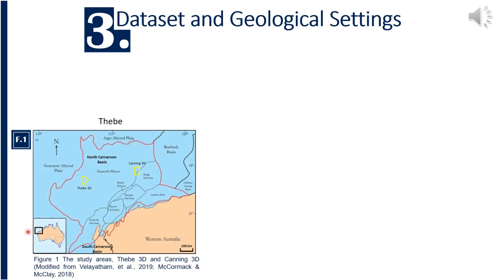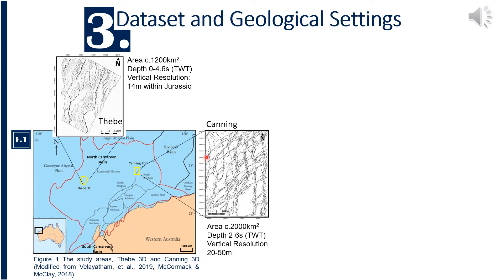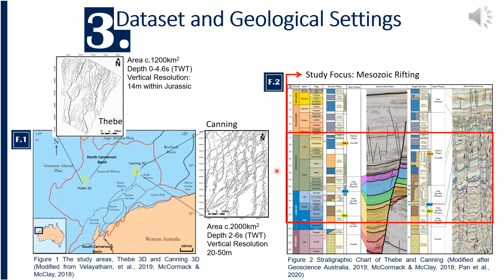Both datasets are located in offshore North-West Australia — the Seabees and Canning blocks. It is interesting to compare these areas as they have different fault patterns. Seabees has a more linear fault pattern, while Canning has more orthorhombic fault patterns. The study focuses on the Mesozoic rift sequence, across the three horizons mentioned.